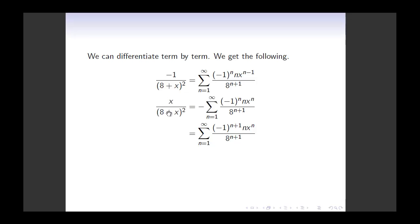Now, multiplying both sides by negative 1 and then by x, I get the expression for x over (8 plus x) squared. Putting x inside the summation raises the power of x to n, and combining the negative sign into negative 1 raises its power to n plus 1. So the power series expansion for x over (1 plus 8x) squared is summation from 1 to infinity, negative 1 to the power n plus 1 times n times x to the power n over 8 to the power n plus 1. The radius and interval of convergence remain the same.